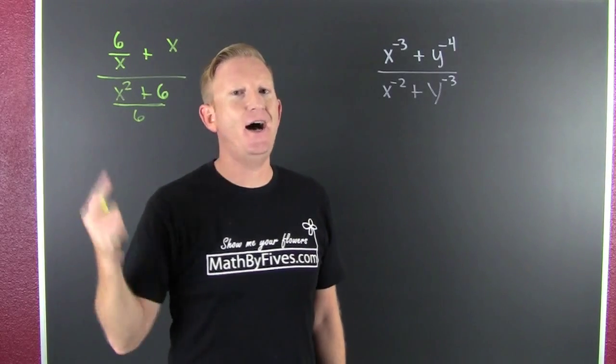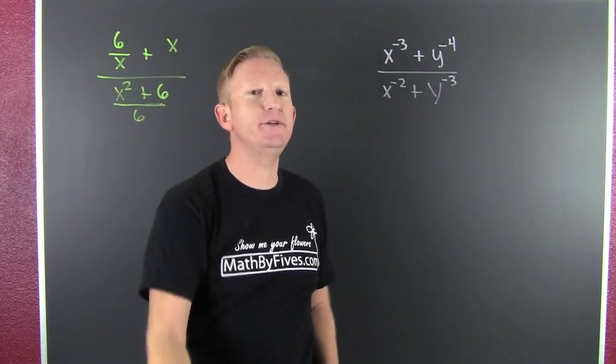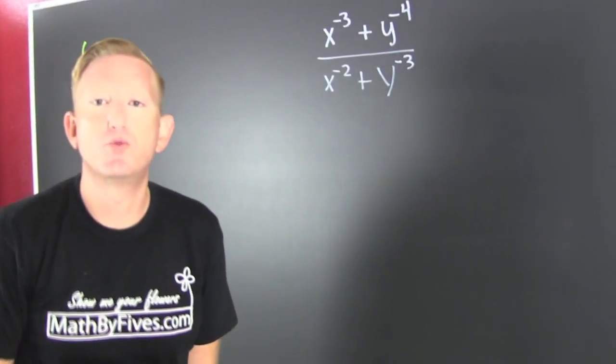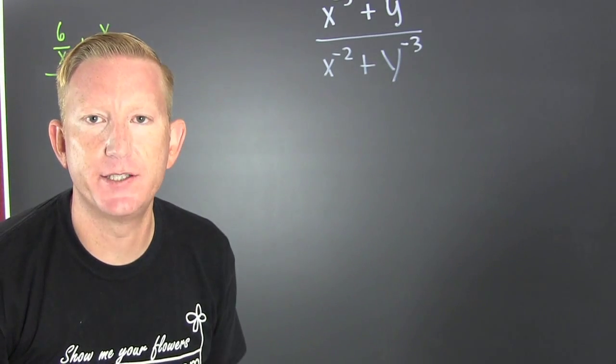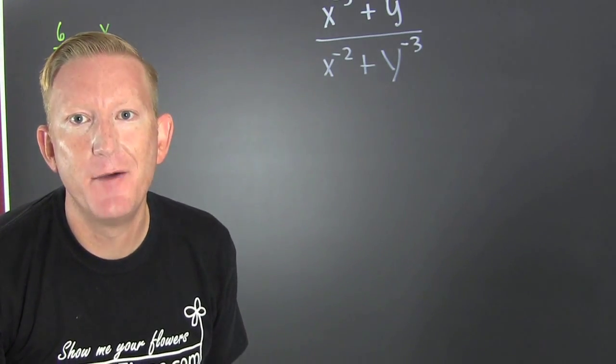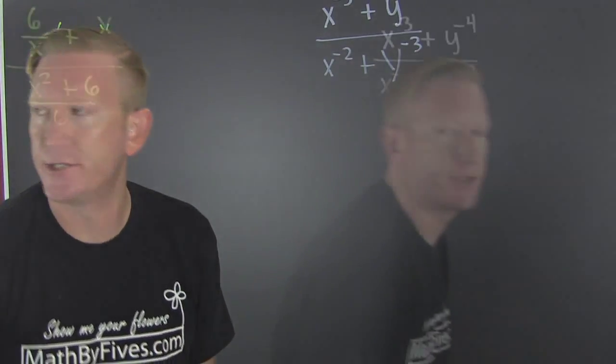This has to be the last of the day I'm spent. I want to reduce these complex rational expressions. What makes them complex? My numerator has a fraction. My denominator has a fraction.